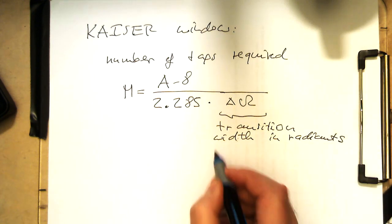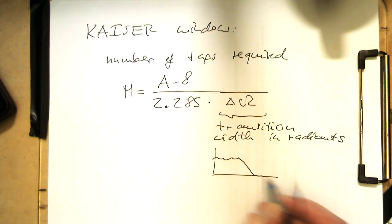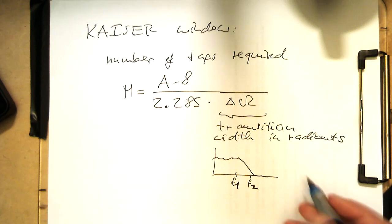So if we have a filter like that and this is our transition widths, then the delta omega is 2 pi F2 minus F1.